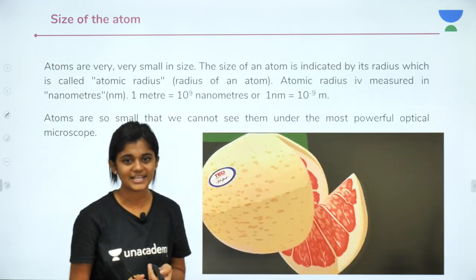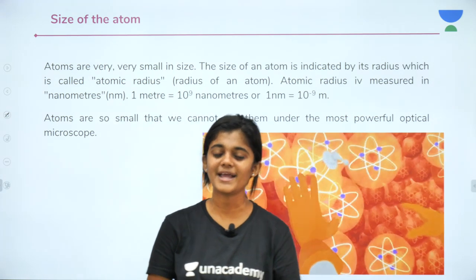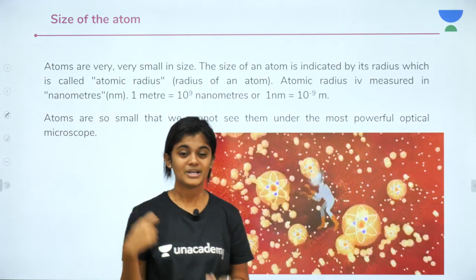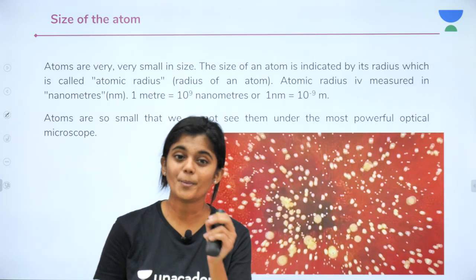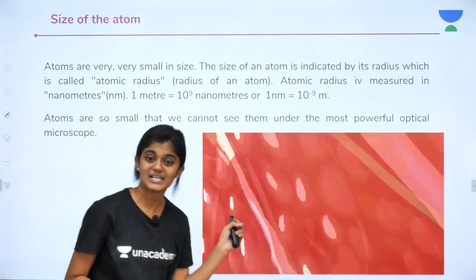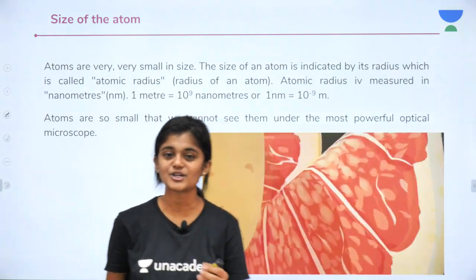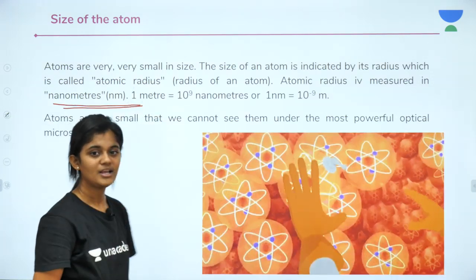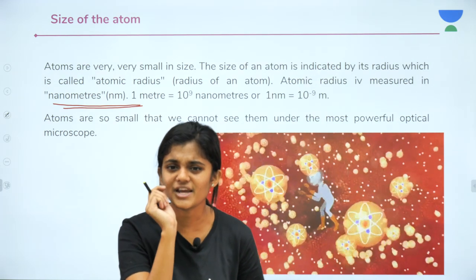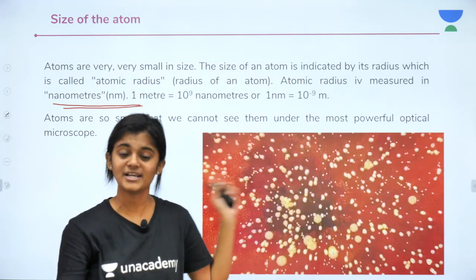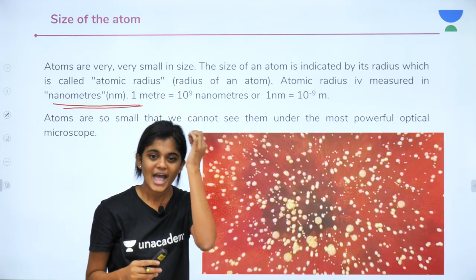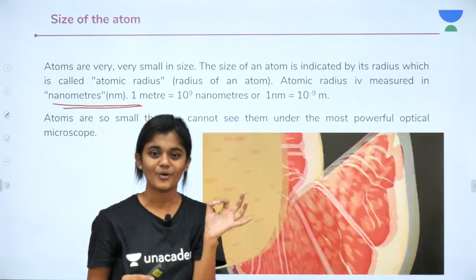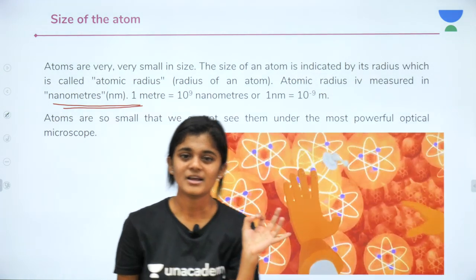Now a question arises in our minds: what is the actual size of an atom? You cannot see an atom with the naked eye — only under a powerful optical microscope can you see its size. When scientists observed atoms under a microscope, the radius was measured in the nanometer range. One nanometer is 10⁻⁹ meters. To give perspective: a strand of your hair is so thin, and yet an atom is far smaller than that. So atoms are measured in the nanometer range — they are extremely tiny.